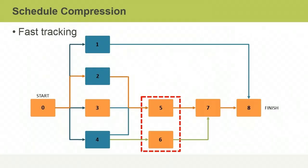Fast tracking involves scheduling two or more activities to be performed in parallel instead of one at a time, helping speed up a project. For example, having technicians test each module of a program as it's finished instead of waiting for the whole program to be completed could save time. A downside is that fast tracking may increase project risk and can only be used if activities can be safely overlapped — testing modules during ongoing development may mean errors could be missed.